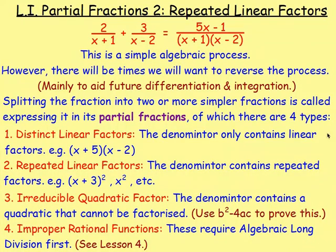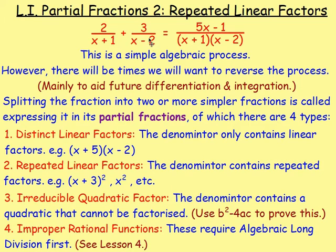A very quick recap of partial fractions. Remember from the last lesson, if you had 2 over x plus 1, add 3 over x take away 2, you could add these fractions together, giving you 5x take away 1 over (x+1)(x-2). That's a simple algebraic process we've been doing for years, but sometimes we have to go back the other way to aid differentiation and integration. If we split the fraction into two or more simpler fractions, it is known as expressing this fraction in its partial fractions, and there are four types. We started with distinct linear factors in the last lesson, and we're now moving on to repeated linear factors.